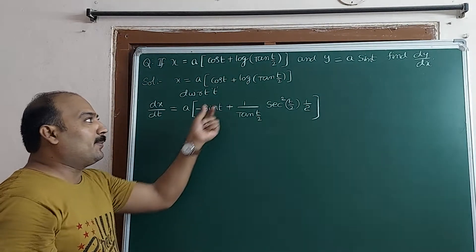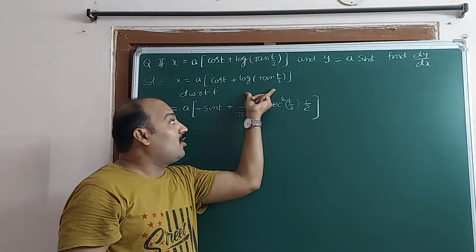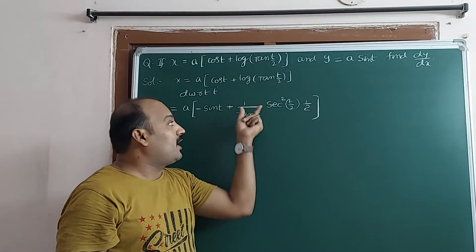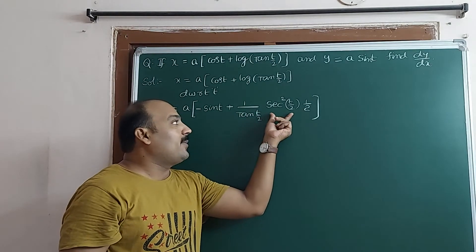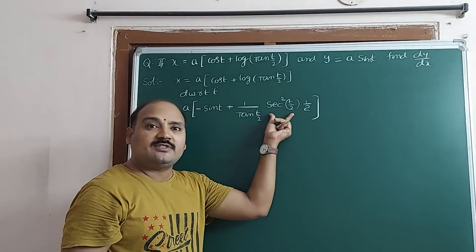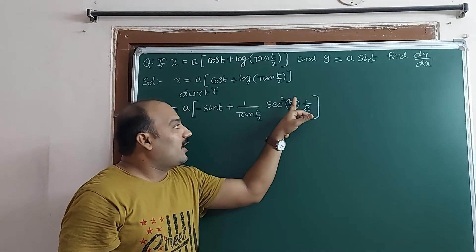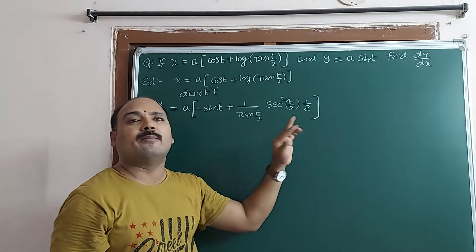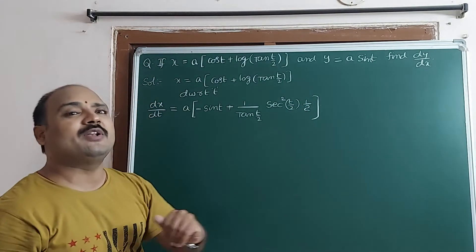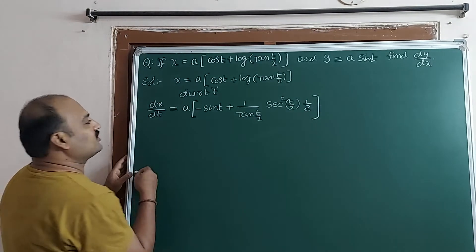To repeat: d/dt of log(tan t/2) = 1/(tan t/2), times derivative of tan t/2 which is sec²(t/2), times derivative of t/2 which is 1/2. We stop there and proceed to simplification.